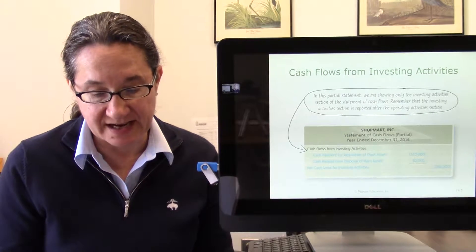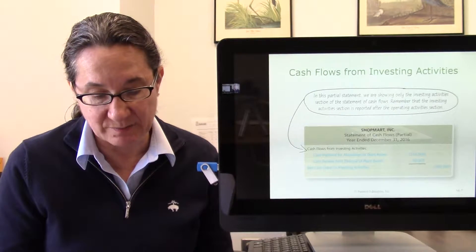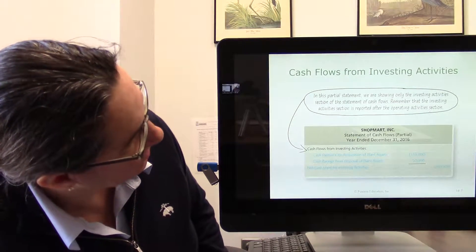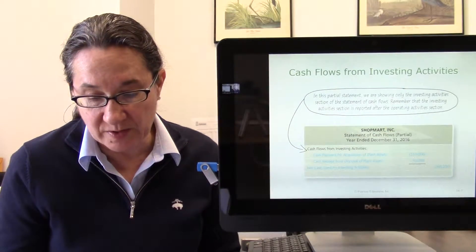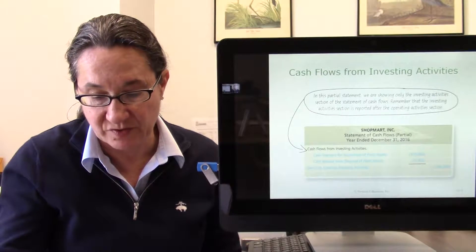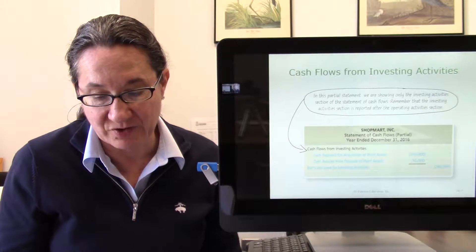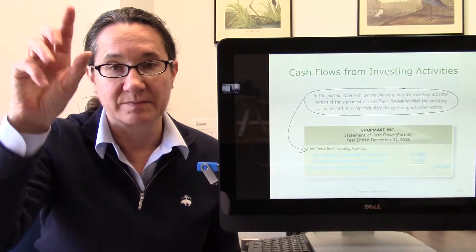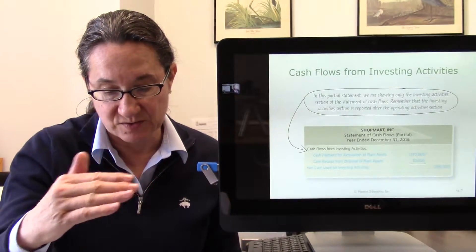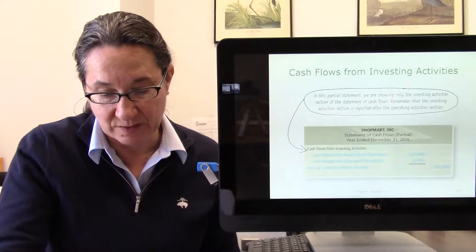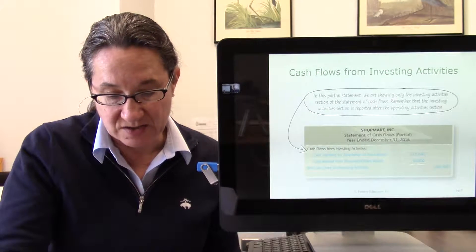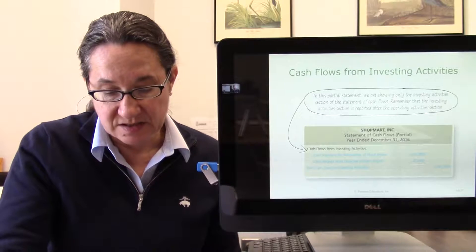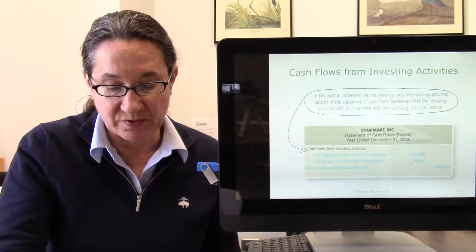Cash flows from investing activities includes the receipt from the disposal of plant assets as well as the purchase of plant assets. In this partial statement, we're showing only the investing activities section of the statement of cash flows. Remember, the investing activities section is reported after operating activities. Last video, we had operating activity, net income, cash from operating activities, and then we're down to the flows from investing.